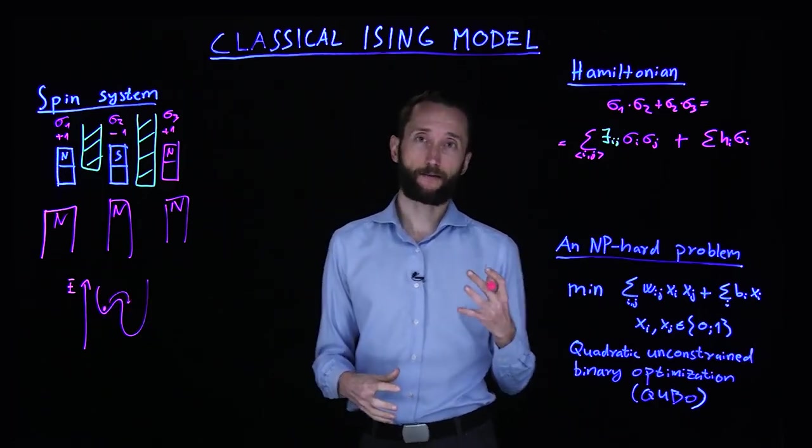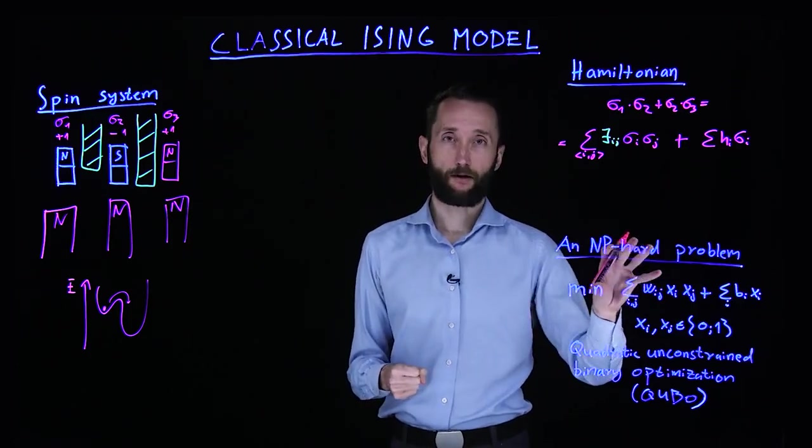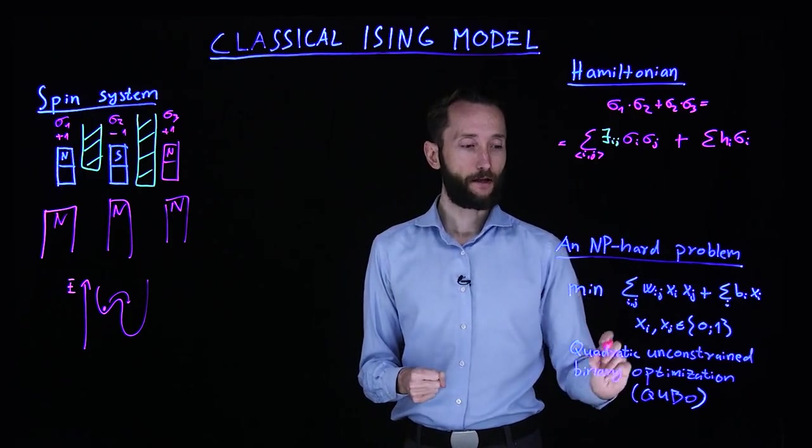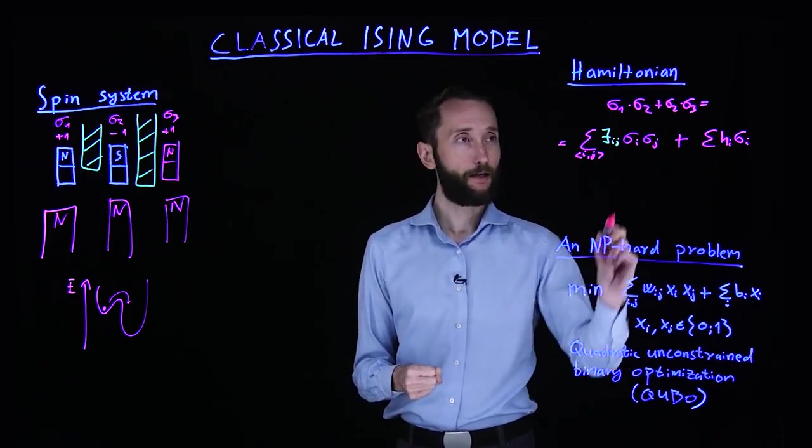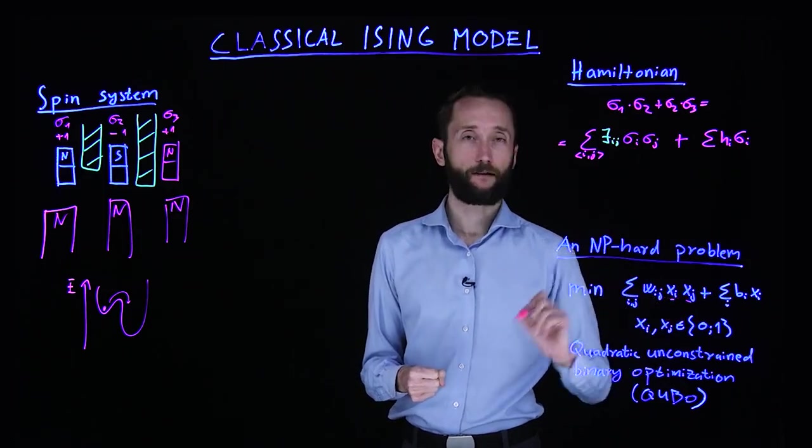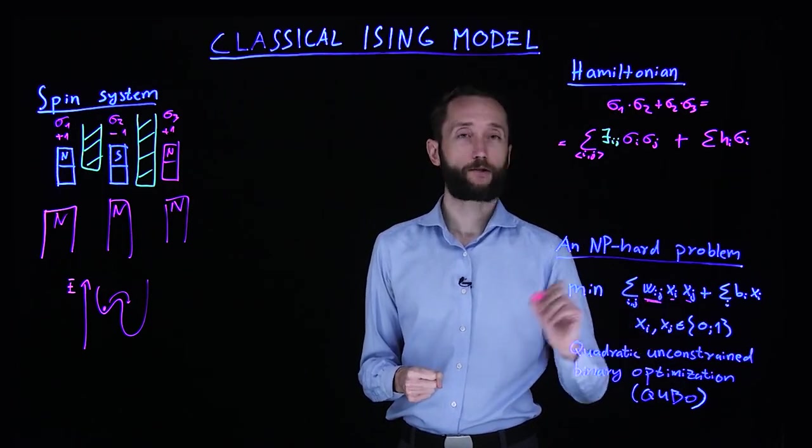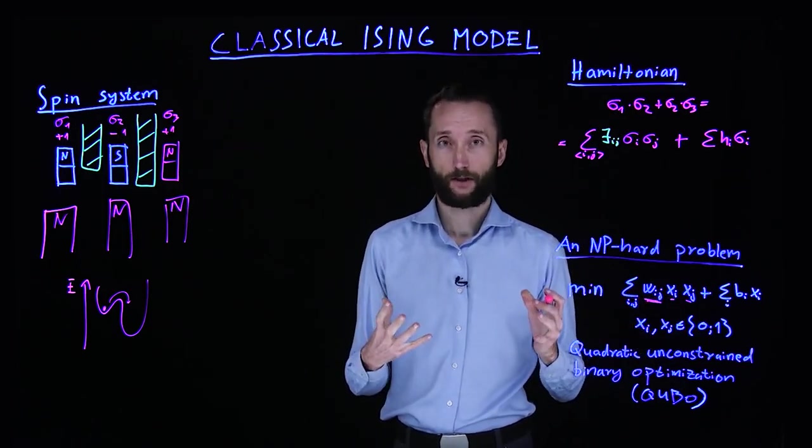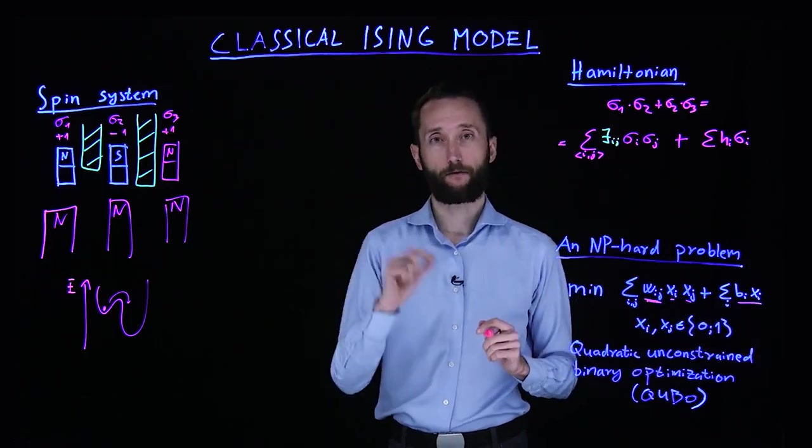And this is exactly the same kind of problem that we see in computer science in certain NP-hard problems. So if you look at something that's called the quadratic unconstrained binary optimization problem, it actually has a very similar form. You have binary variables and you have some interaction strength between them.